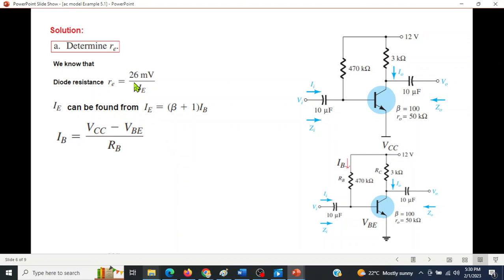Plugging in the values we can calculate I_B and then we'll calculate I_E and then r_e. V_CC is 12 volts, V_BE is always 0.7 for silicon diode, 470 is R_B, so I_B = 24.04 microamperes.